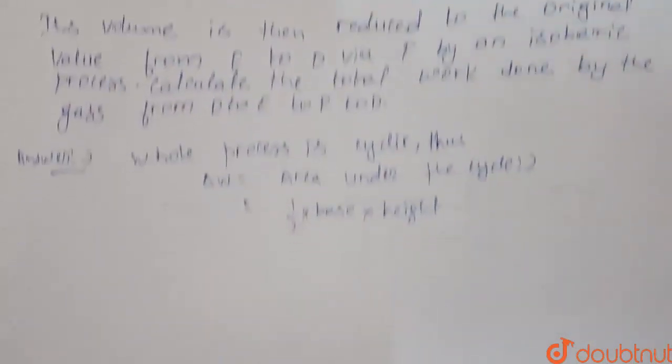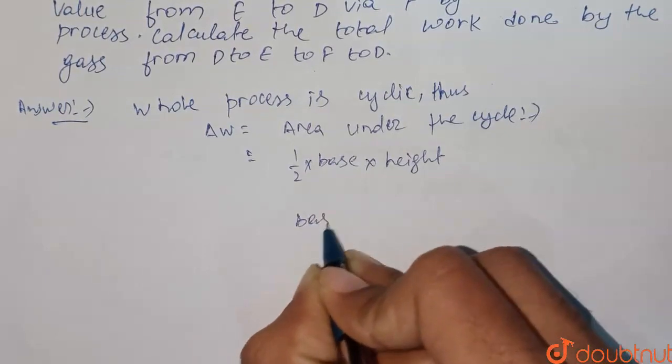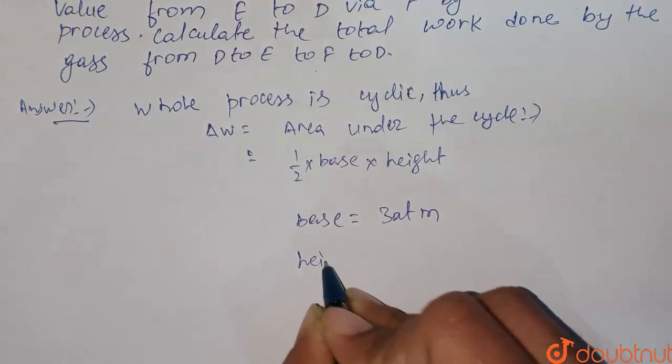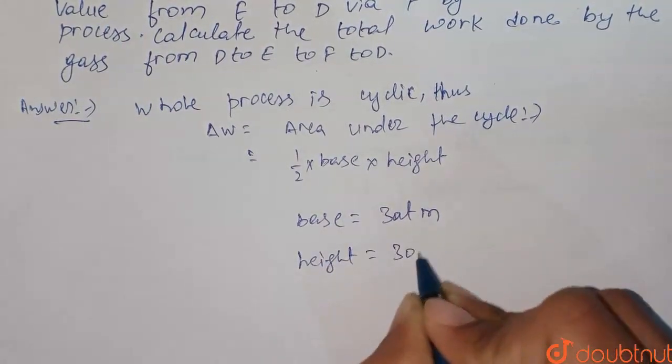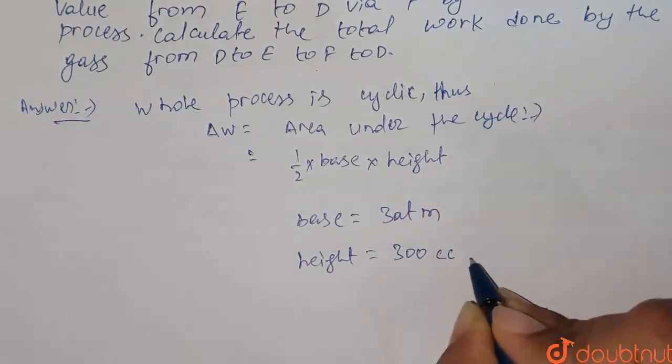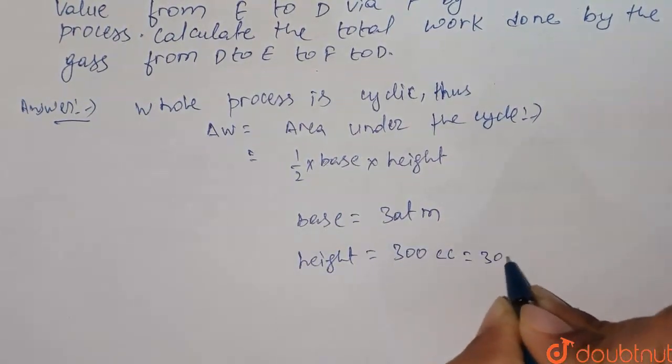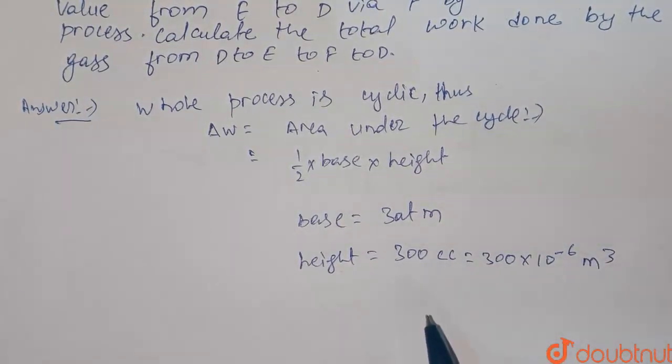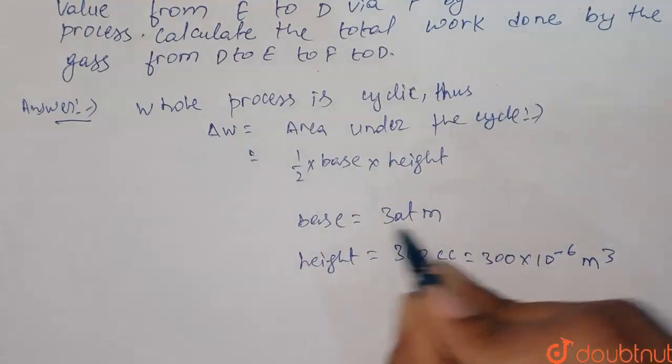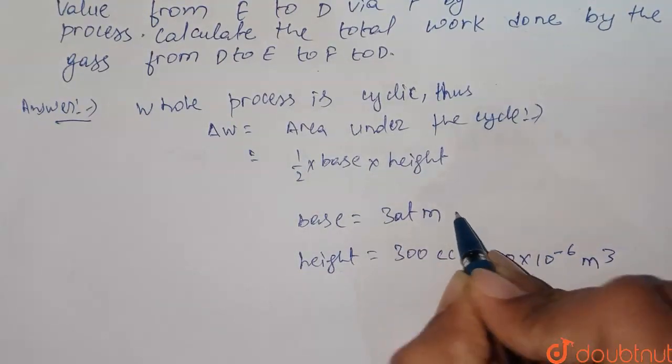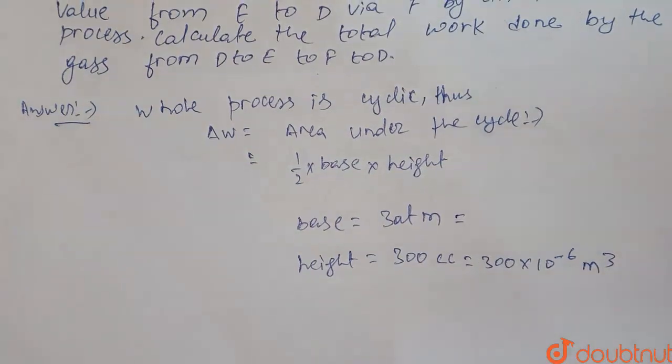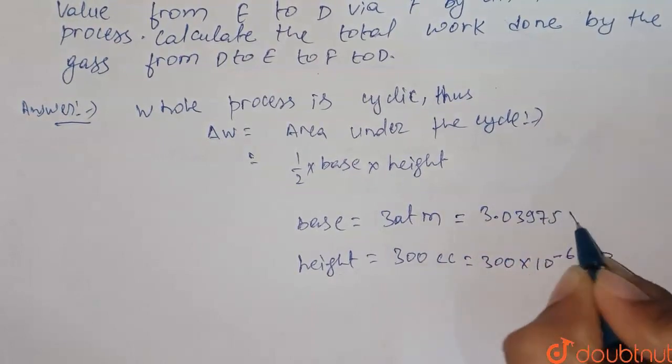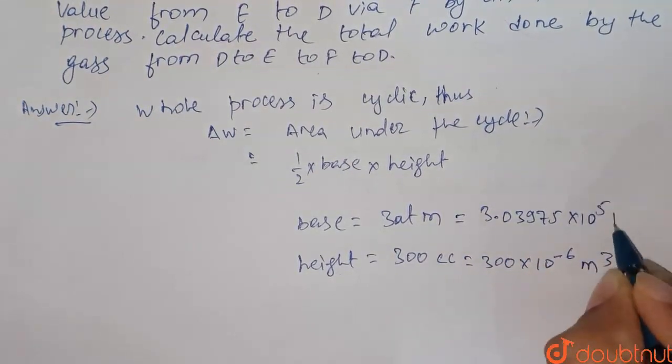Consider base as 3 atm pressure, and height equal to 300 cubic centimeter. So 300 cubic centimeter will be 300 into 10 to the power minus 6 meter cube. This will be the SI unit of volume. Now, changing the base, that is 3 atm into its SI unit, that is Pascal: 3 atm will be 3.03975 into 10 to the power 5 Pascal.